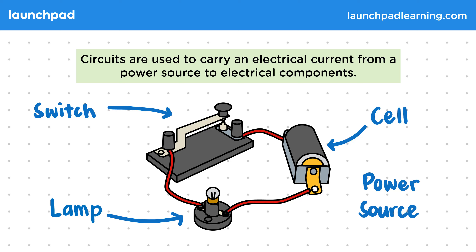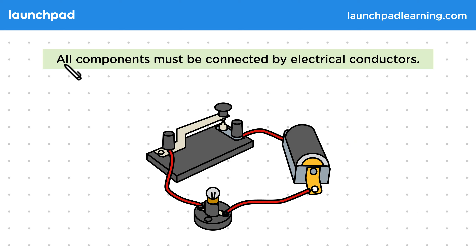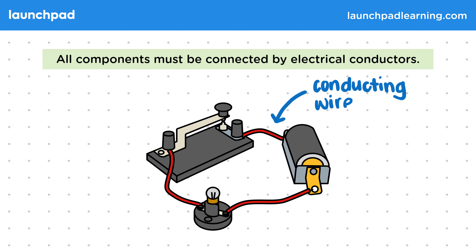But how do we connect the components together? All components must be connected by electrical conductors. Usually, these conducting wires are made of long, drawn-out metals, since these conduct electricity well. We'll then wrap these in insulating plastic so we don't hurt ourselves when touching the wire. Then the wires must be arranged in a special way.